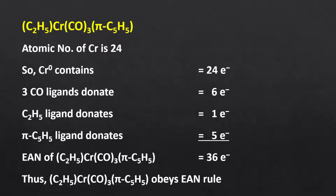In this complex, the atomic number of chromium is 24 and there is no charge on the complex, so the oxidation state of chromium is 0. Chromium will contribute 24 electrons. Each carbonyl ligand will donate 2 electrons, giving 6 electrons from 3 carbonyl ligands. The ethyl ligand and pi-cyclopentadienyl will donate 1 and 5 electrons respectively. That means this complex also follows the 36 electron effective atomic number rule and is stable.